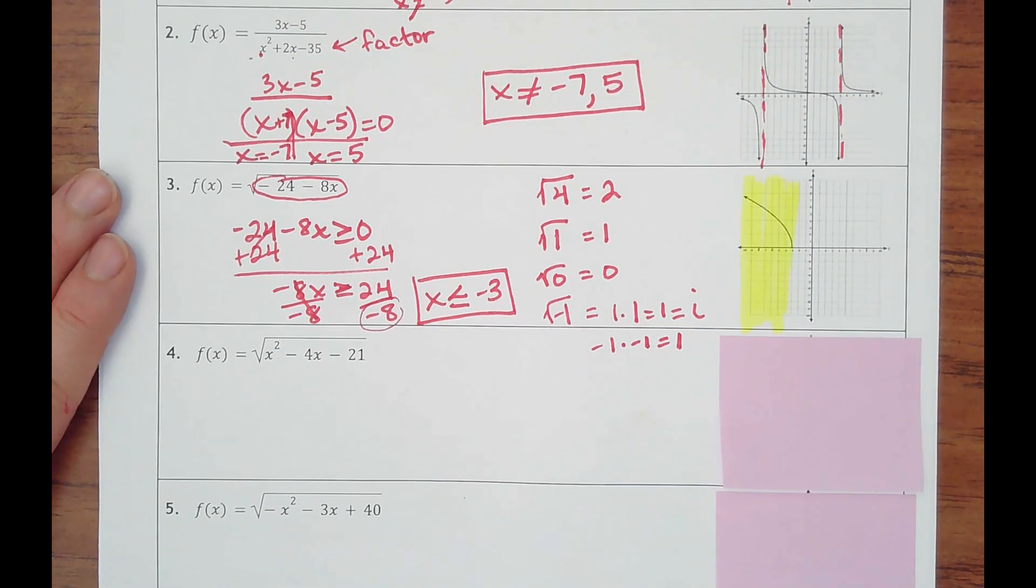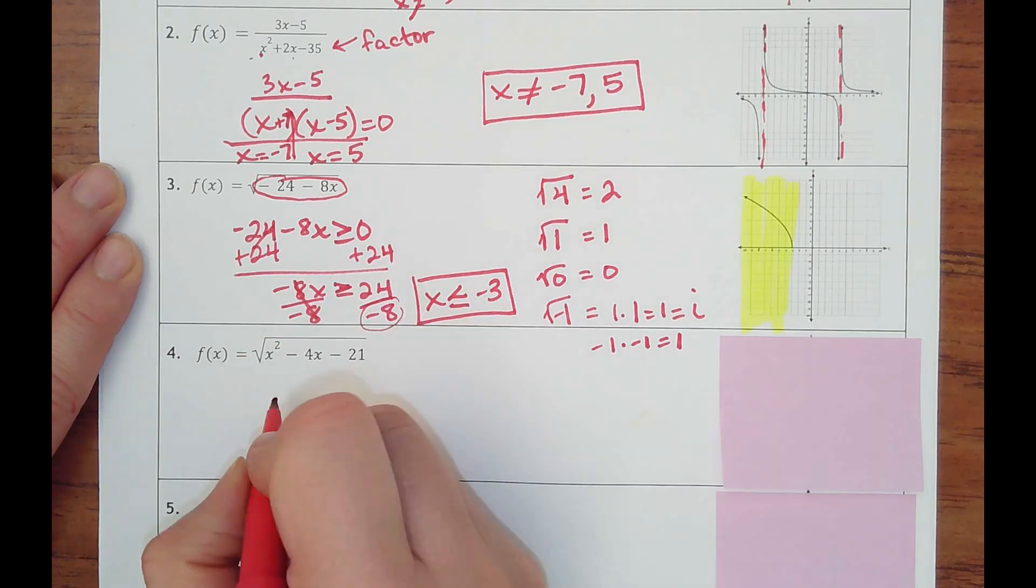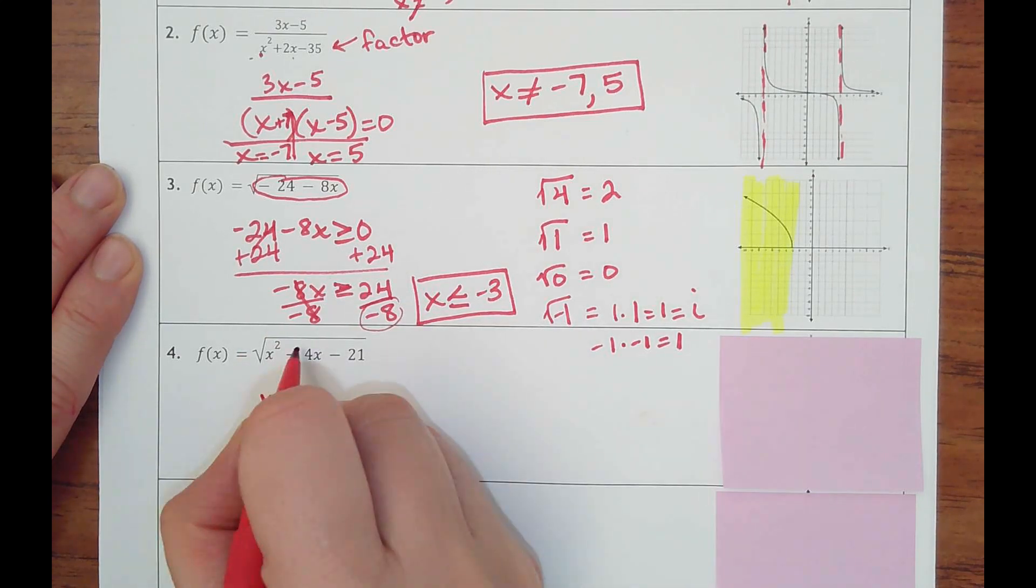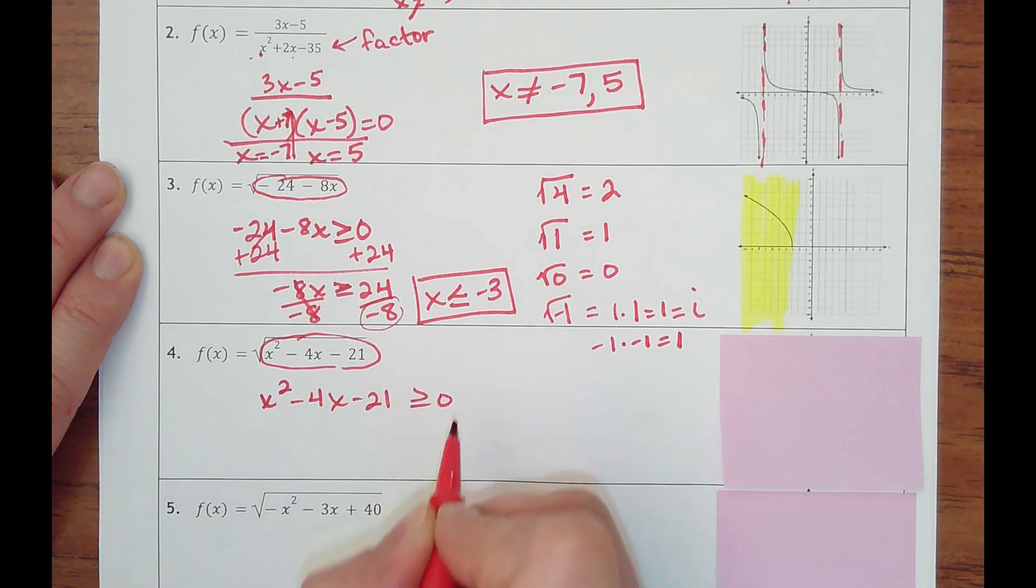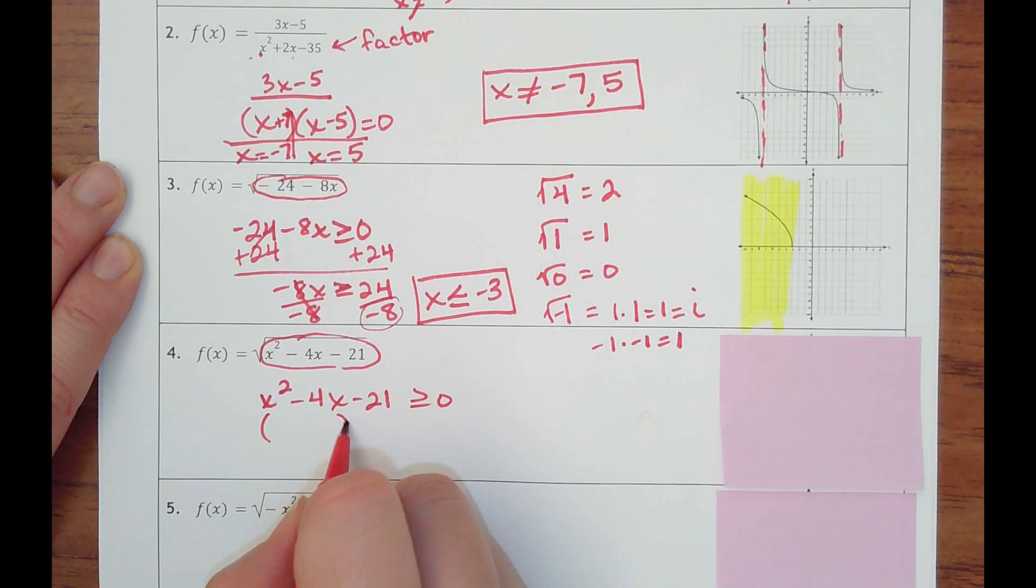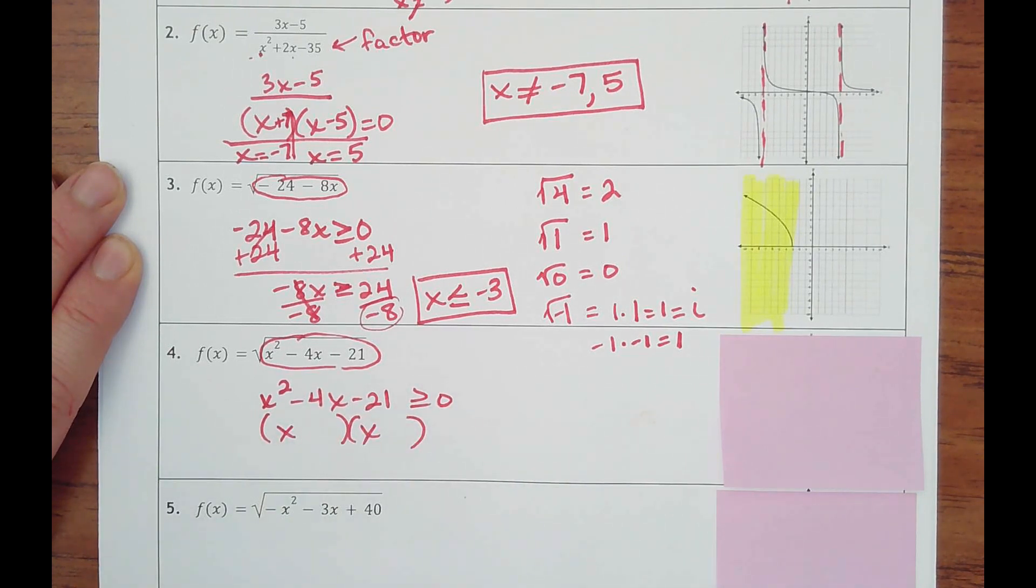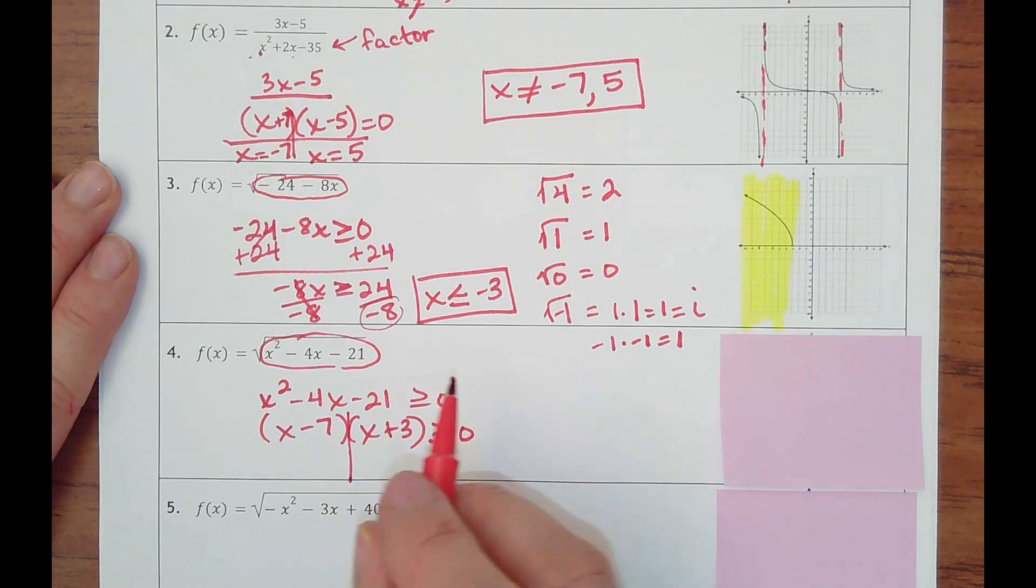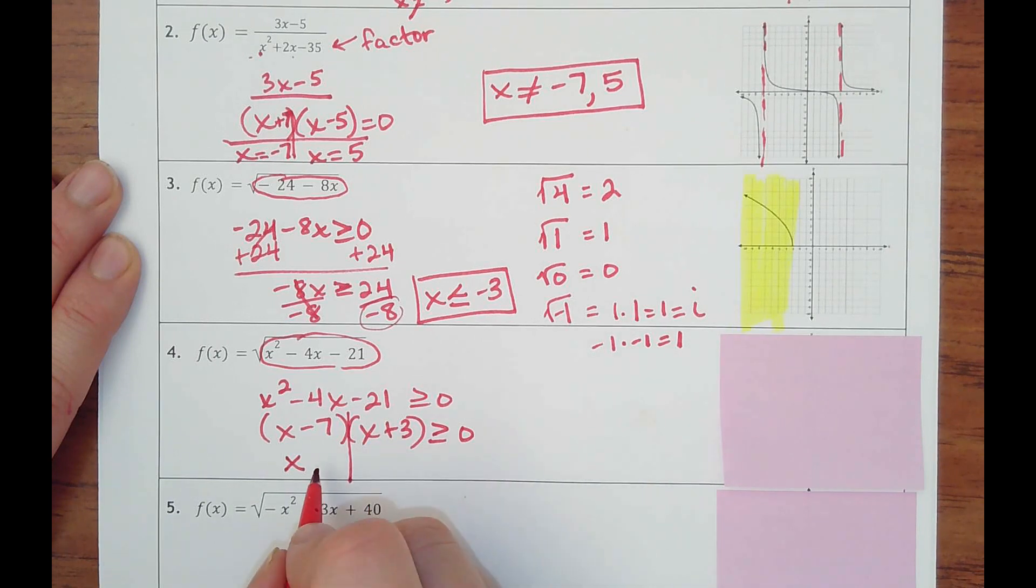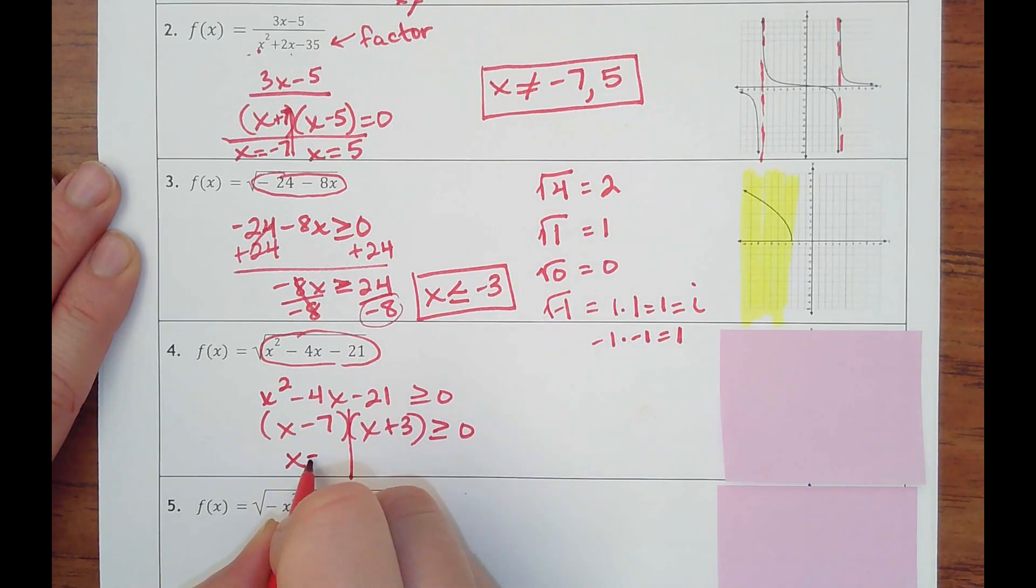All right, number four. That's not having a quadratic under a square root. So we would want to say this whole thing needs to come out greater than or equal to zero every single time. I'm going to have to factor this. That would be negative 7 plus 3. Okay, there's no multiplying or dividing. I'm just having two different things. So I would have x equals 7 and x equals negative 3 for right now.